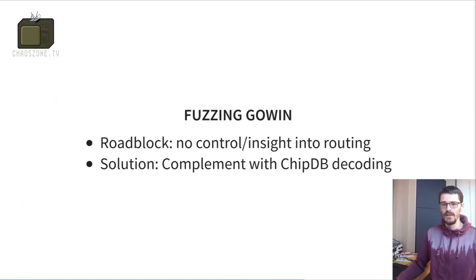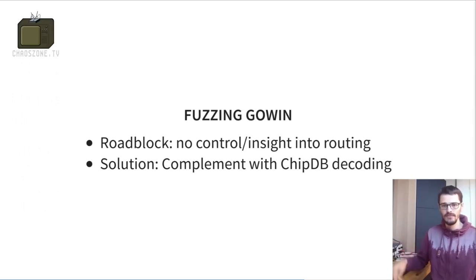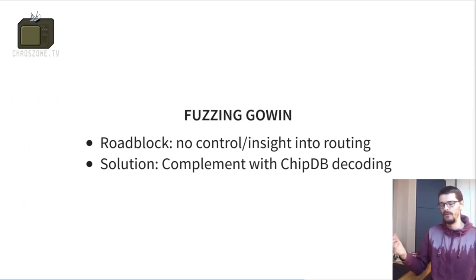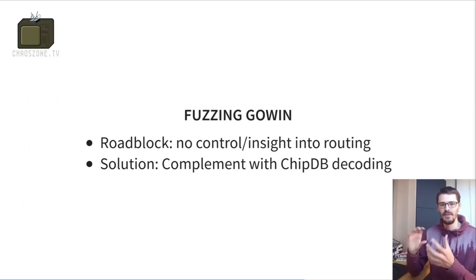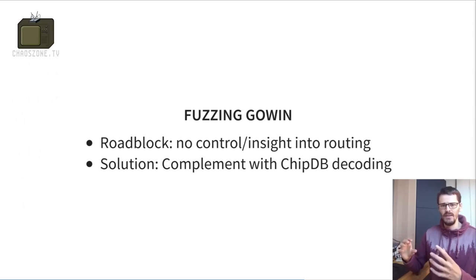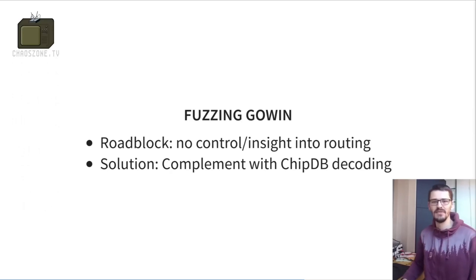A major roadblock with GoWin is that there's no control or insight into routing. From what I've heard about iCE40, ECP5, and other FPGAs, you can usually either control where you want a wire to go or at least inspect which routes the vendor tools choose. GoWin doesn't seem to offer this kind of control, which makes it almost impossible to fuzz routing — you can't make a minimal change that changes which wire is used, you just have to rely on the router to pick a different one, which is really a pain.